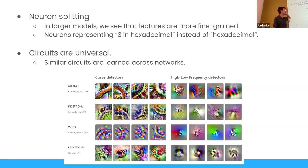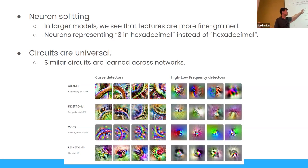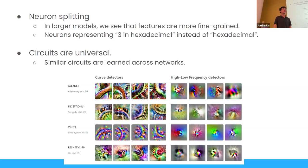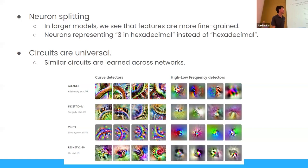Circuits are universal. If you find a circuit inside GPT-2, chances are it's also in GPT-3. Curve detectors are very generalizable between CNNs because every CNN needs to detect curves. We also find induction heads in basically every transformer we look at, because every transformer needs to do in-context learning. If a transformer sees someone's name in one part of a sentence and then sees that first name later on, it learns to predict their last name by copying from the earlier part of the sentence.